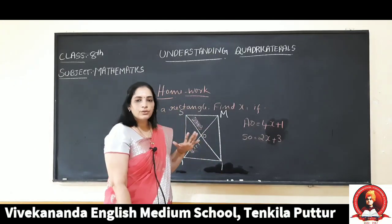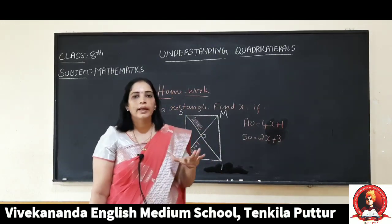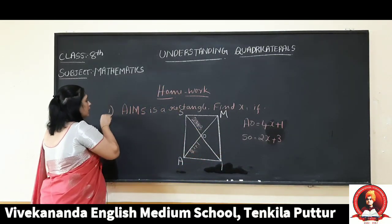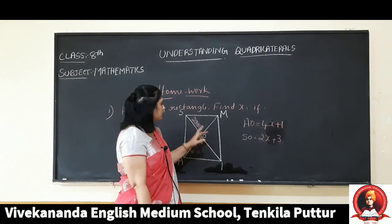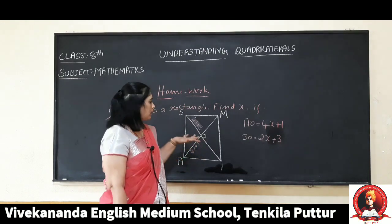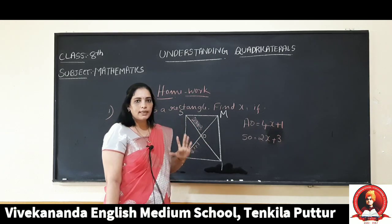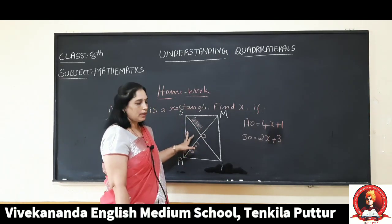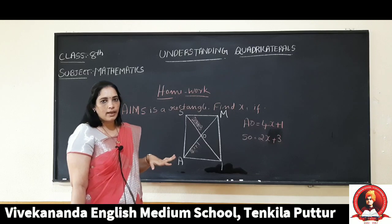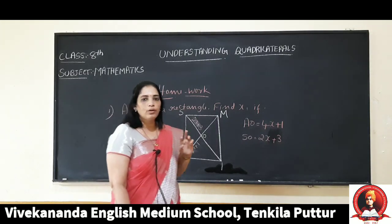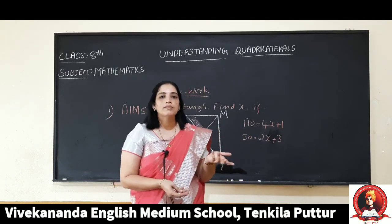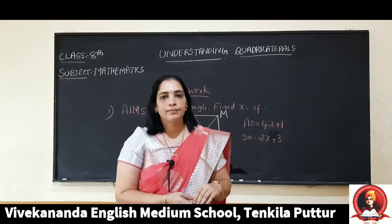This is today's class. In today's class we studied about the rectangle and square. I have given one homework problem: in rectangle AMS, find the x value. Use the same method we solved today — AO equals SO — and solve the equation to find the x value. Do it in your mathematics notebook. I hope all of you understood today's class. In the next class we will solve the remaining exercise problems. Thank you.